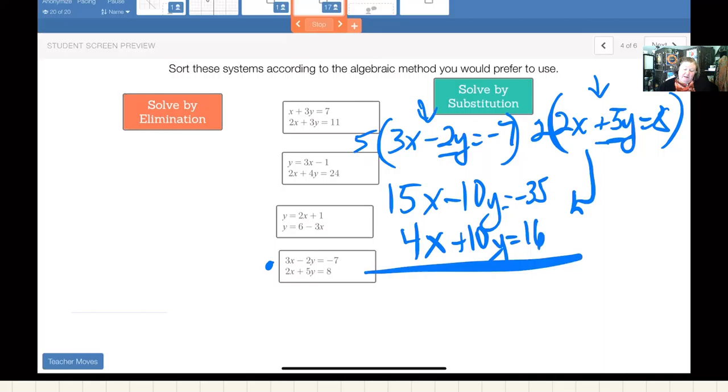This would be eliminated because negative 10y and positive 10y is 0. We would get 19x is equal to negative 19. Our x here would be equal to negative 1.